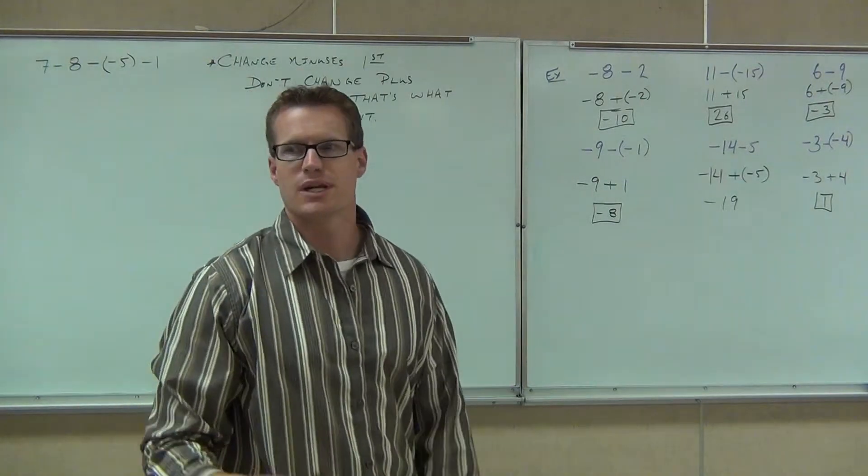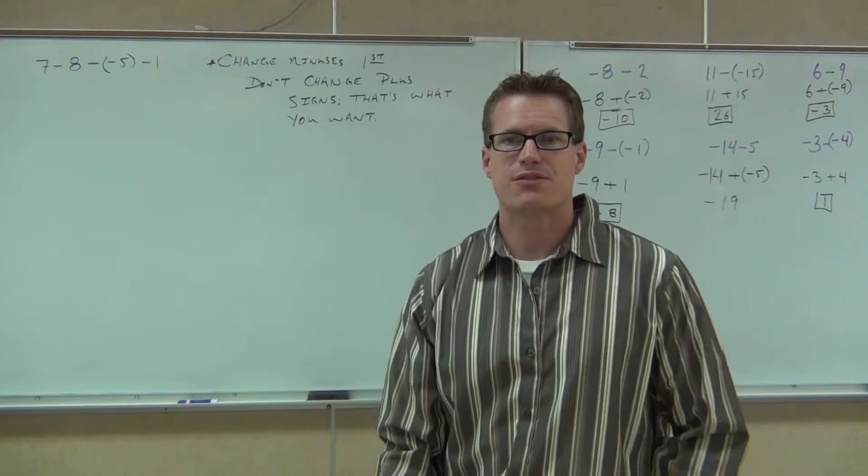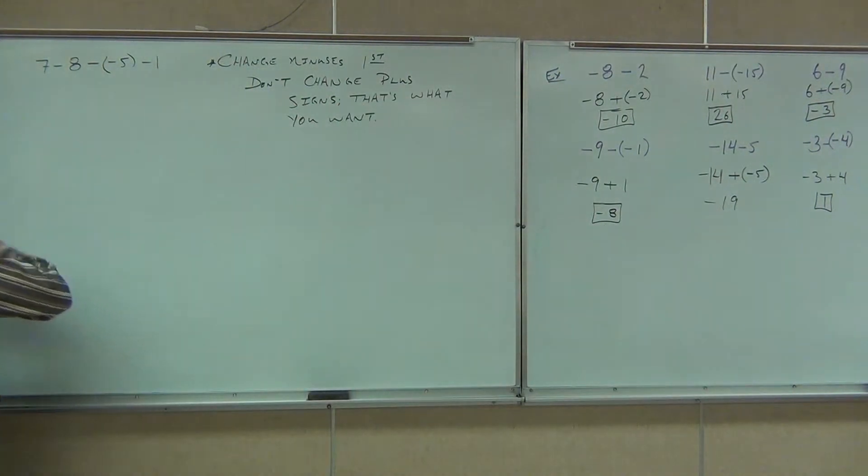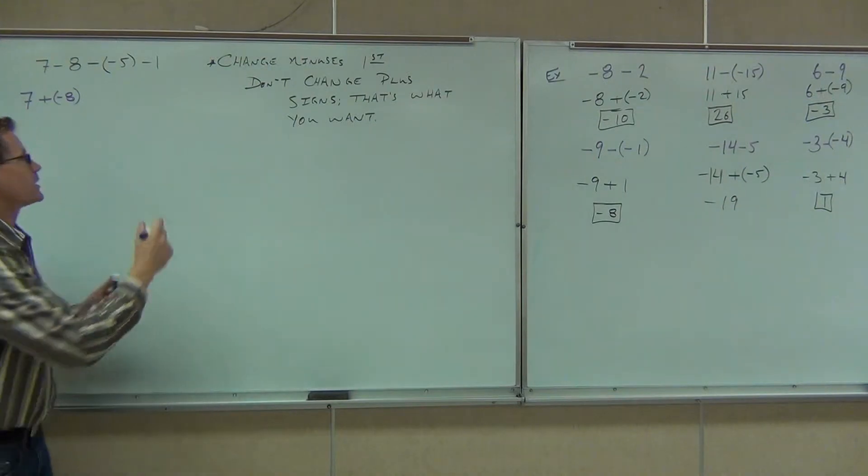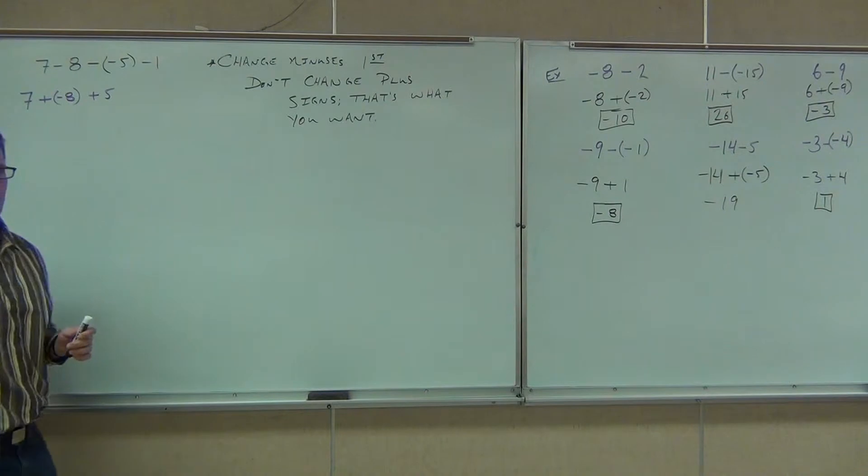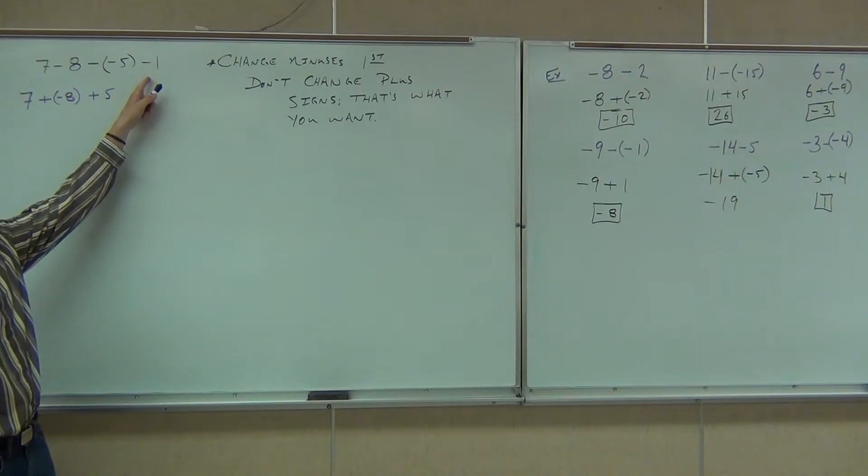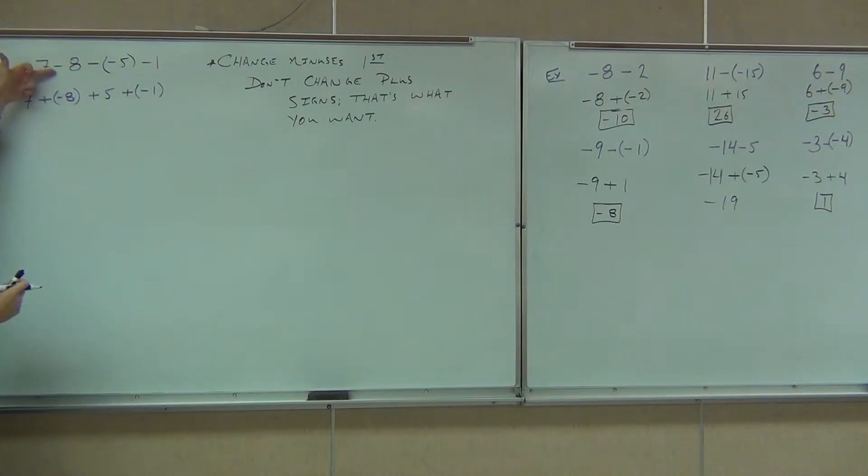So change the minuses first. Don't change the plus signs. So first thing we're going to do, let's go through this together. Everywhere we see a minus, we're going to use one of our two cases to change that to a plus somehow. So we're looking at 7 minus 8. With 7 minus 8, am I going to change the minus to just a plus or a plus negative? You tell me. Okay, so let's do that. So 7 plus negative 8. Do you follow? Okay, next thing says minus negative 5. Can you tell me what minus negative 5 becomes? So we're going to do that. Right there, that makes it a whole lot easier. Minus and negative changes to a plus. We can see that a lot better. And lastly, we'll do minus 1 changes to what now? Just a plus? Negative. Minus becomes a plus negative. Minus and negative becomes a plus. Minus becomes a plus negative.